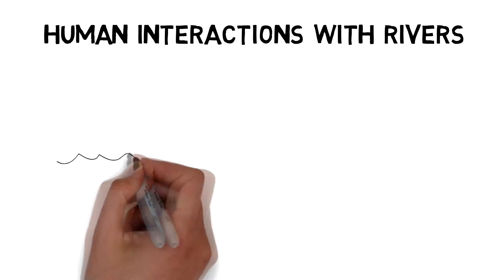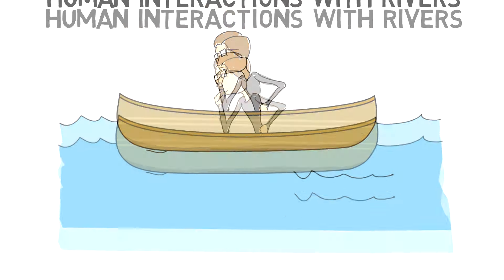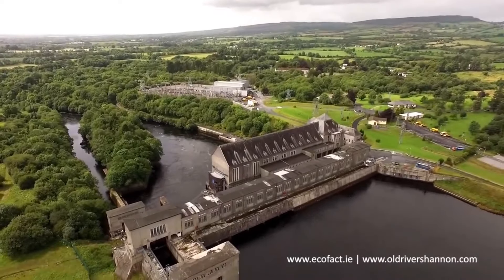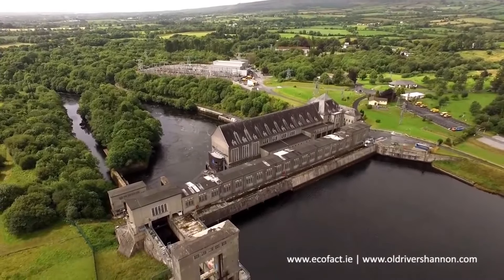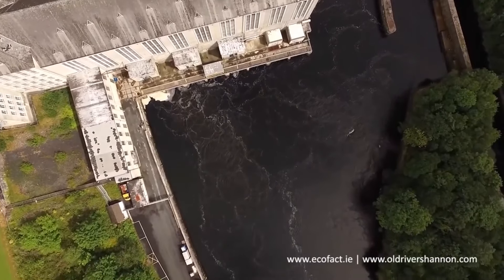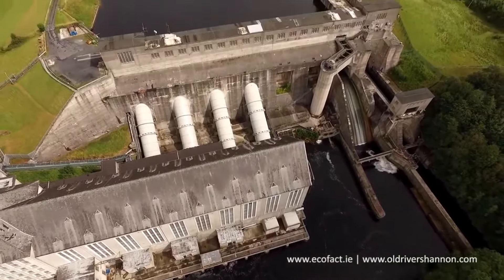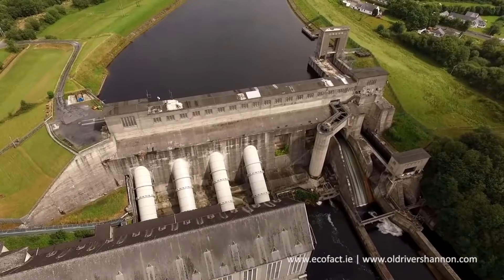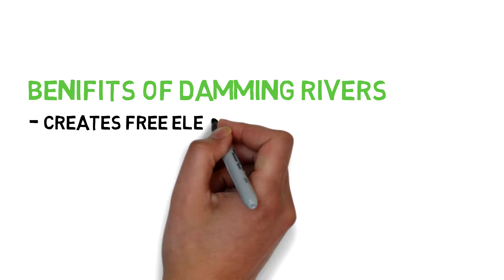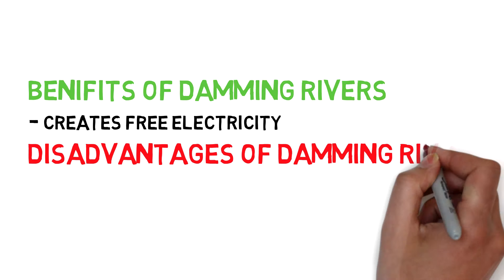Now that we've looked at all these features, we can learn about humans' relationships and interactions with rivers. A case study for this is dam building in Ireland — Ardnacrusha on the River Shannon, where the ESB built a hydroelectric power plant to generate electricity. A dam was constructed across the river valley, and behind this dam the trapped water has risen to create an artificial lake. Damming our rivers has many benefits, such as creating free electricity, but it can also have disadvantages, like flooding fertile farmland.